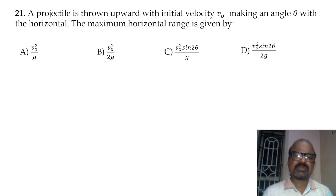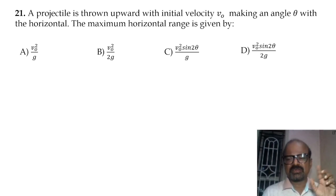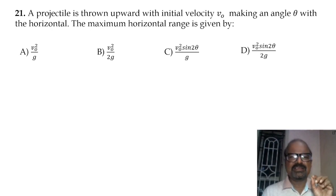A projectile is thrown upward with initial velocity v0 making an angle theta with the horizontal. The maximum horizontal range is given by v0 squared times sine 2-theta divided by g.